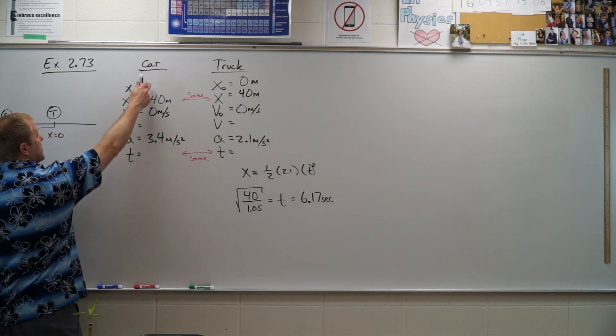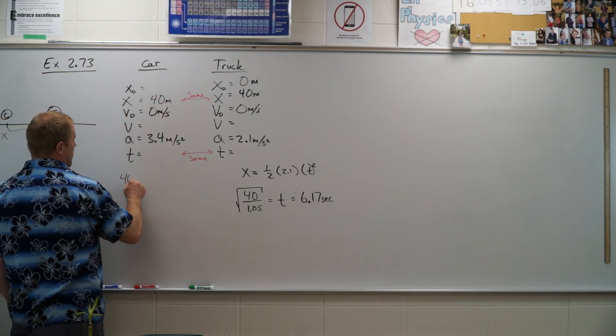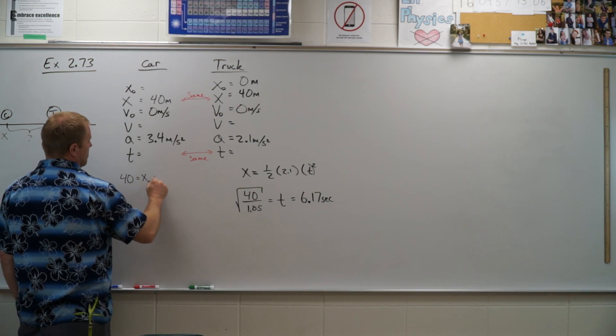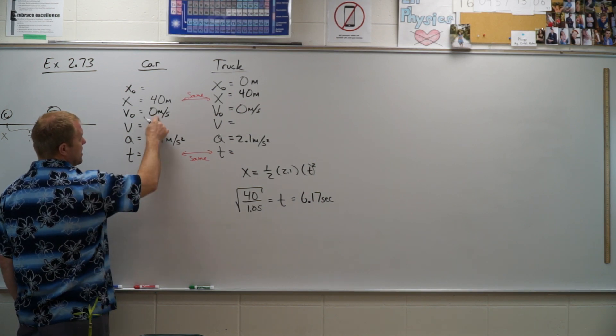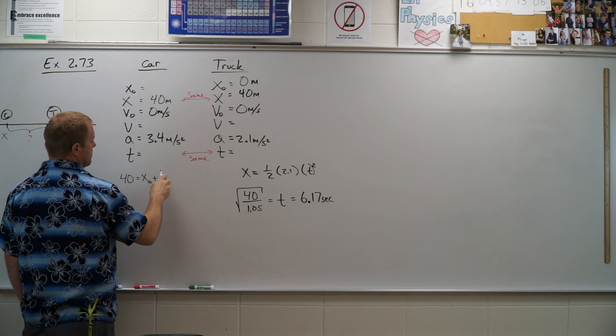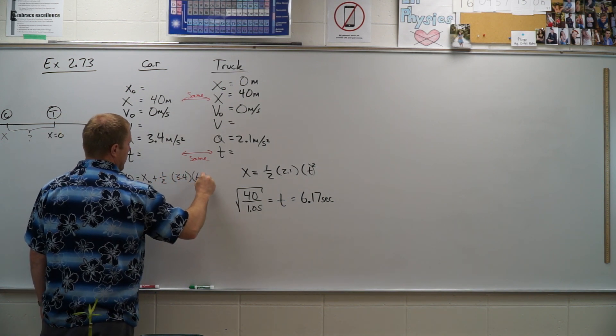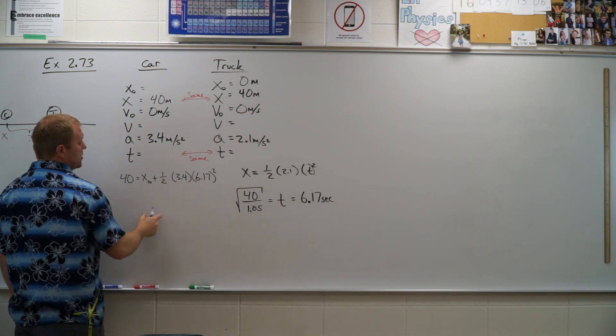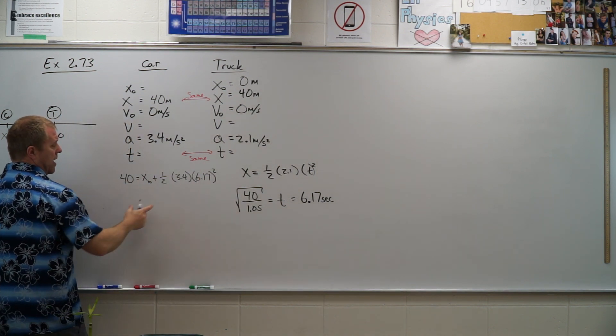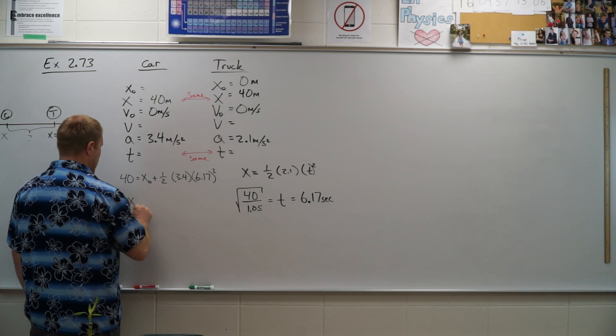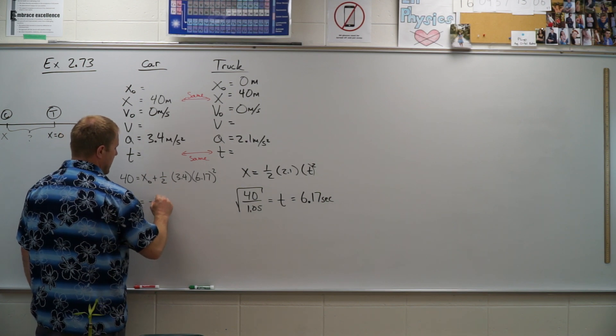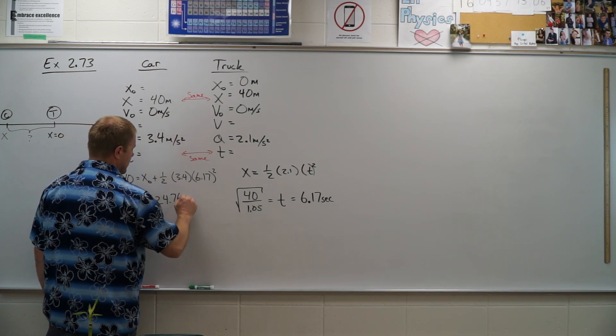So now that I know my time, I'm going to go ahead and solve for x naught. So I have 40 is equal to x naught plus v naught t, but v naught was zero, so that term's gone, plus one half times 3.4 times 6.17 squared. So go ahead, subtract that over, 40 minus whatever this thing is gives me my x naught value of negative 24.76 meters.